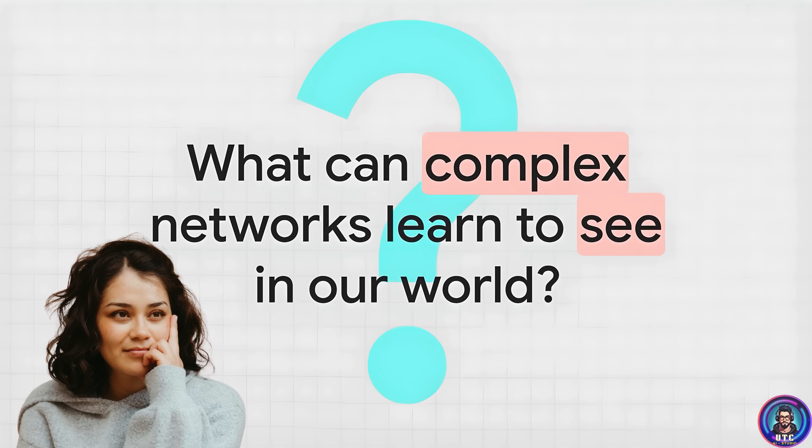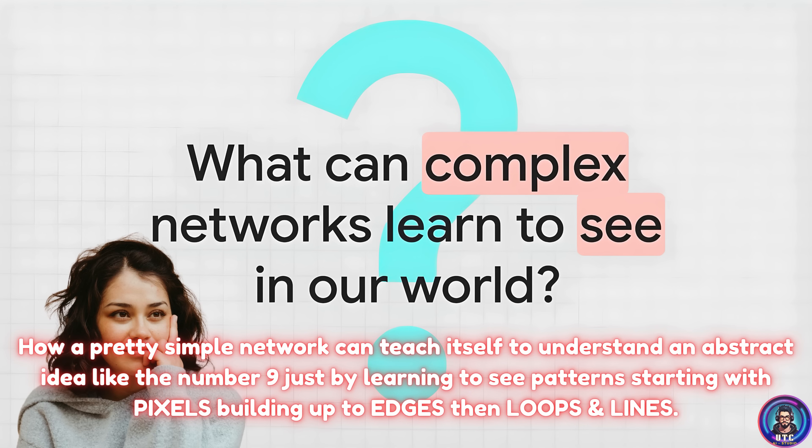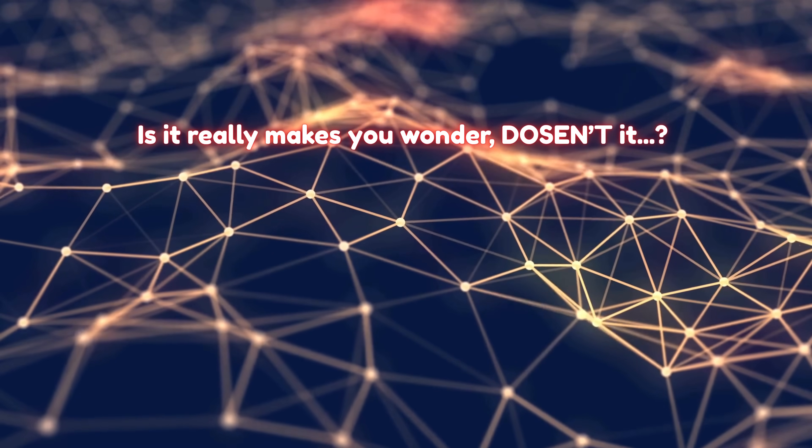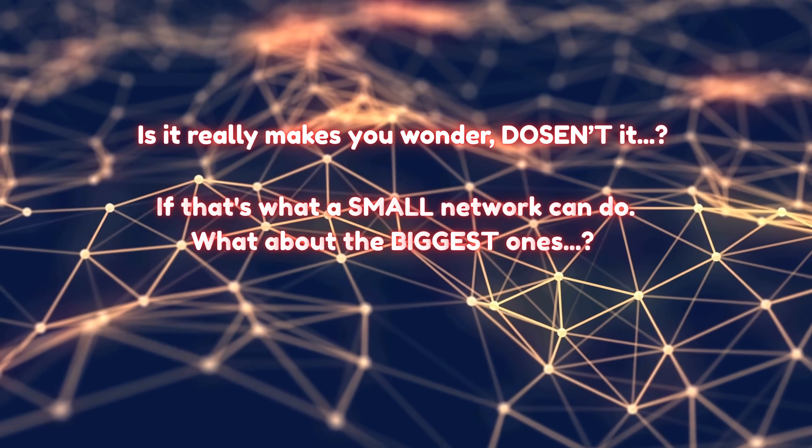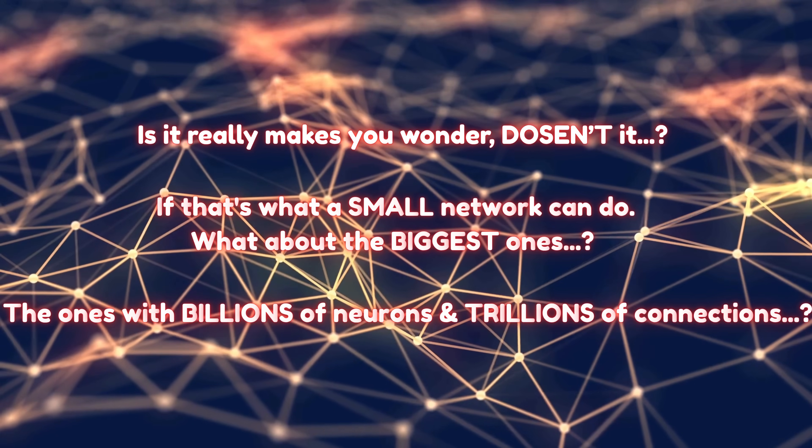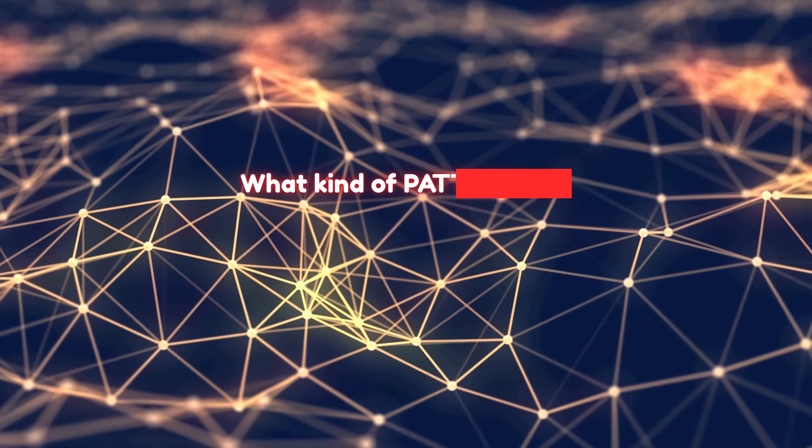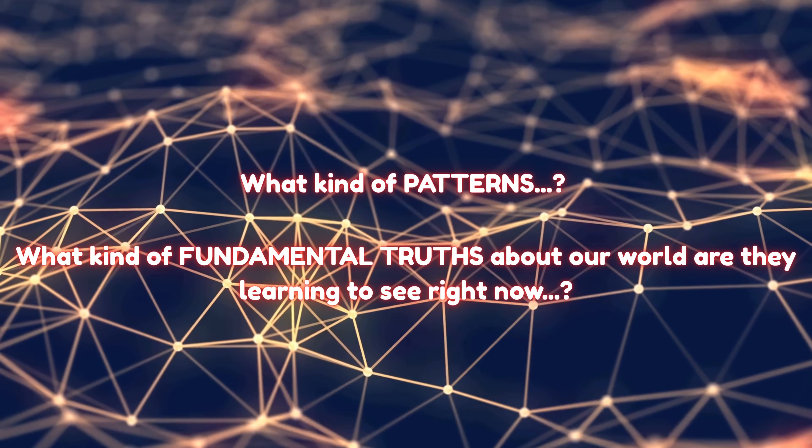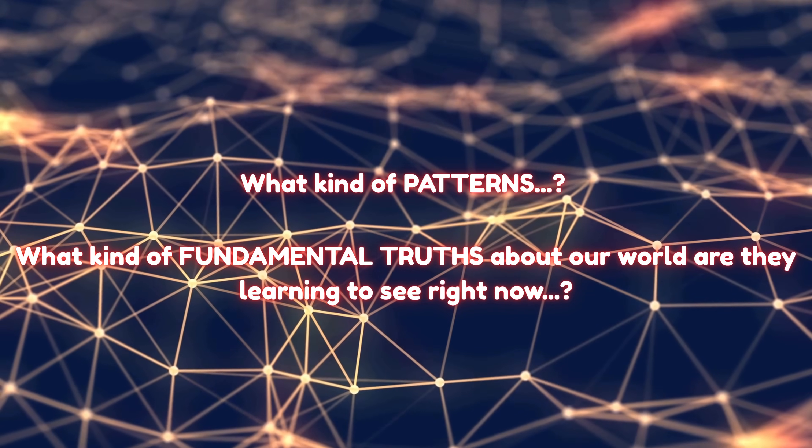Just end on this one thought. We just saw how a pretty simple network can teach itself to understand an abstract idea like the number nine, just by learning to see patterns of patterns, starting with pixels, building up to edges, then loops and lines. Does it really make you wonder, doesn't it? If that's what a small network can do, what about the biggest ones? The ones with billions of neurons and trillions of connections? What kind of patterns? What kind of fundamental truths about our world are they learning to see right now?